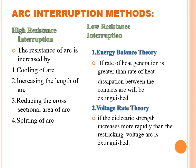The arc must be extinguished or removed as early as possible. There are two main methods: high resistance interruption and low resistance interruption. In the high resistance method, the resistance of the arc is increased so that arc current decreases to such an extent that it cannot be sustained between the two contacts. This can be achieved by cooling of arc, increasing the length of arc, reducing the cross-sectional area of arc, or splitting of arc.